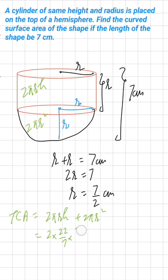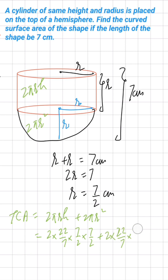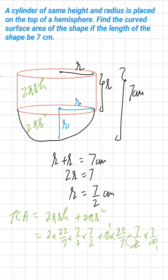Substituting: radius = 7/2, height = 7/2, so we have 2 × (22/7) × (7/2) × (7/2) plus 2 × (22/7) × (7/2)². Cancelling common factors: the 2s and 7s cancel out appropriately.